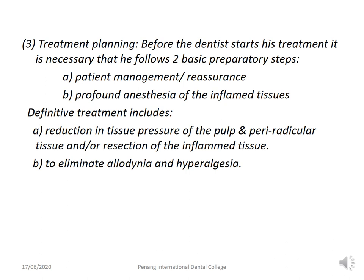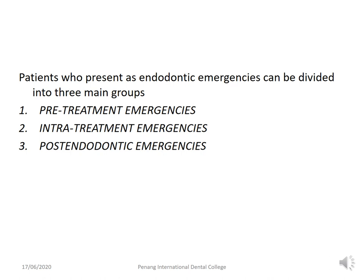Before the dentist starts treatment, two basic preparatory steps are necessary. First is patient management or reassurance — you need to reassure the patient that the pain will be relieved and they will be okay at the end of treatment. Second is the establishment of profound anesthesia of the inflamed tissues. After these preparatory steps comes the definitive treatment, which includes reduction in tissue pressure of the pulp and peri-radicular tissues, rejection of inflamed tissues, and elimination of allodynia and hyperalgesia.